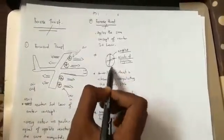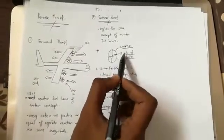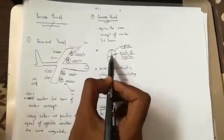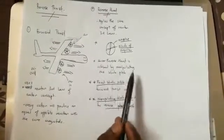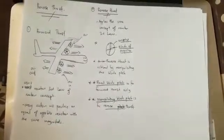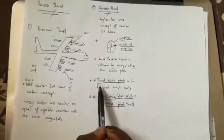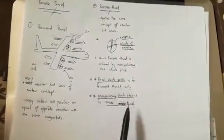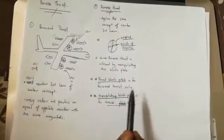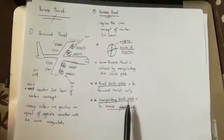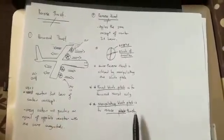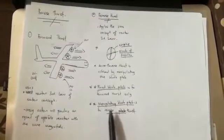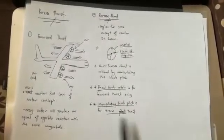This is the engine, this is the propeller blade, and this is the propeller hub. Reverse thrust is achieved by manipulating the blade pitch. There are two types of blade pitch: fixed blade pitch, which is only used for forward thrust, and manipulating blade pitch, which allows us to manipulate the pitch of the blade to achieve the desired thrust direction — in this case, for reverse thrust purposes.